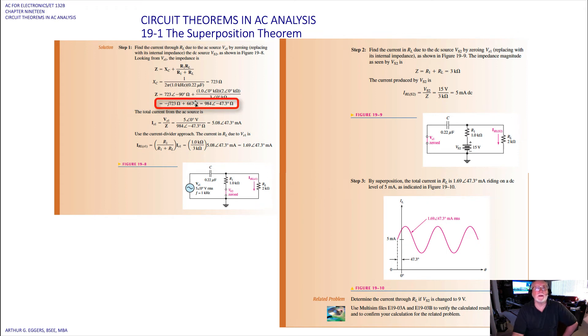This gives us then our terms, once we do our polar to rectangular conversions, of minus J723 ohms plus 607 ohms. In polar form, once we convert that, becomes 984 at an angle of minus 47.3 ohms.